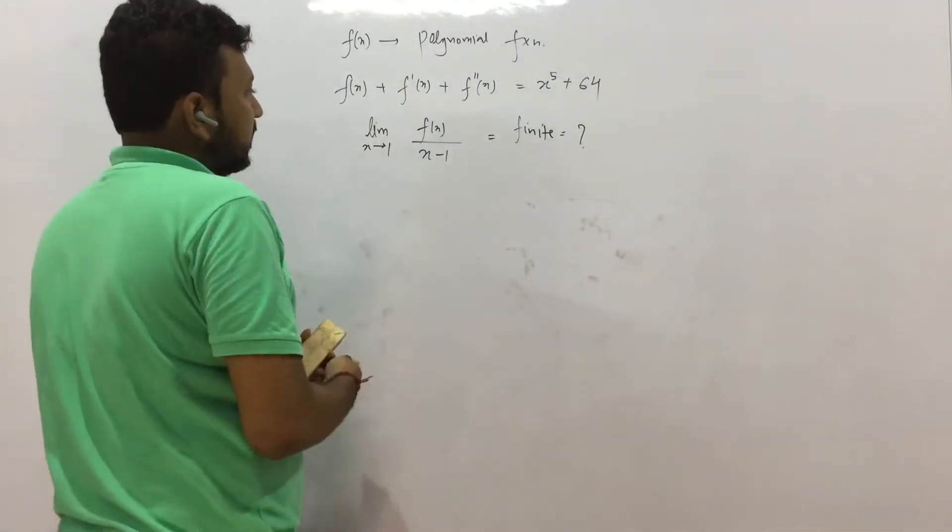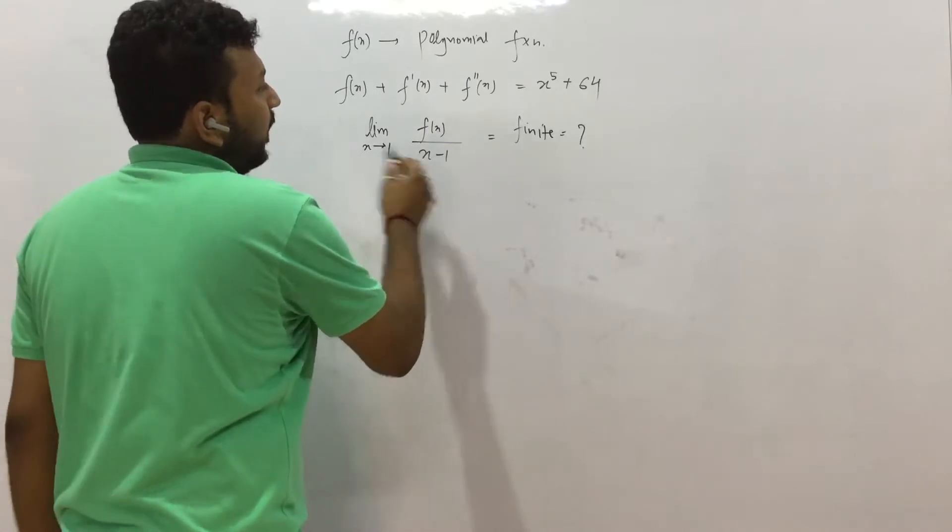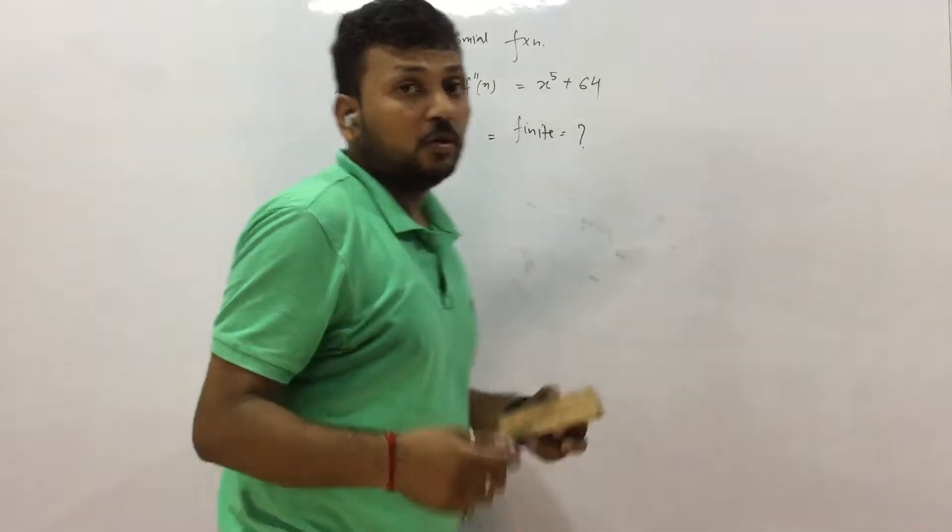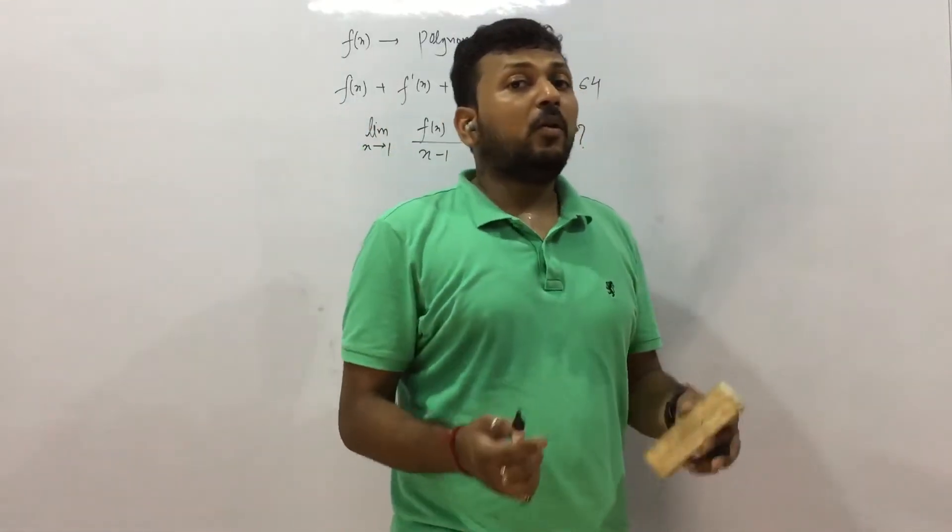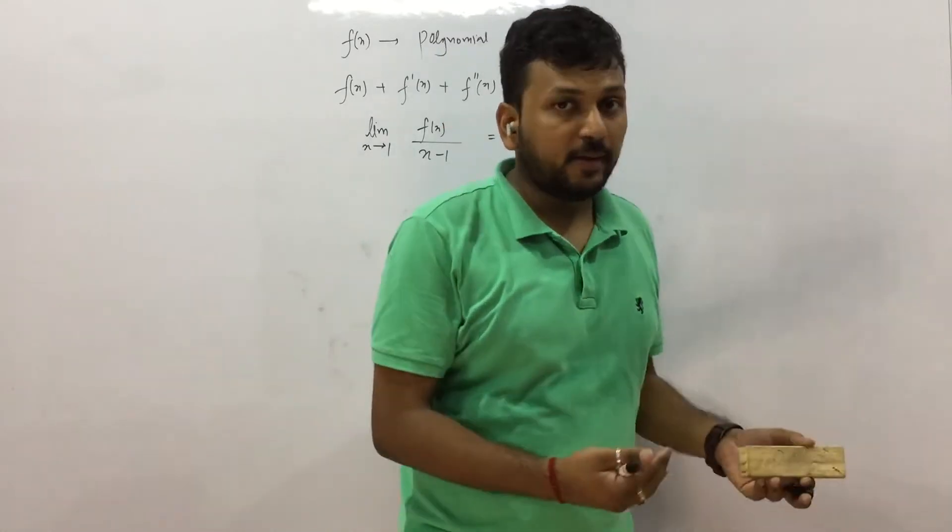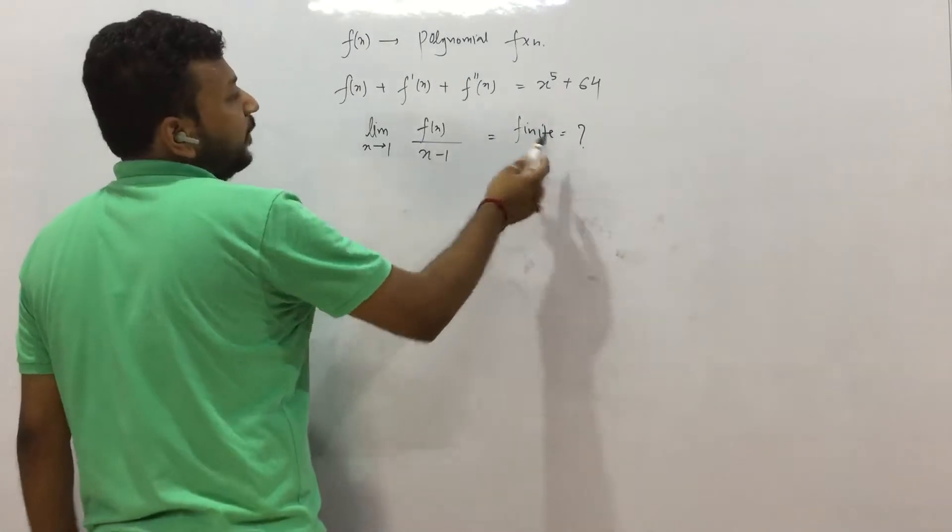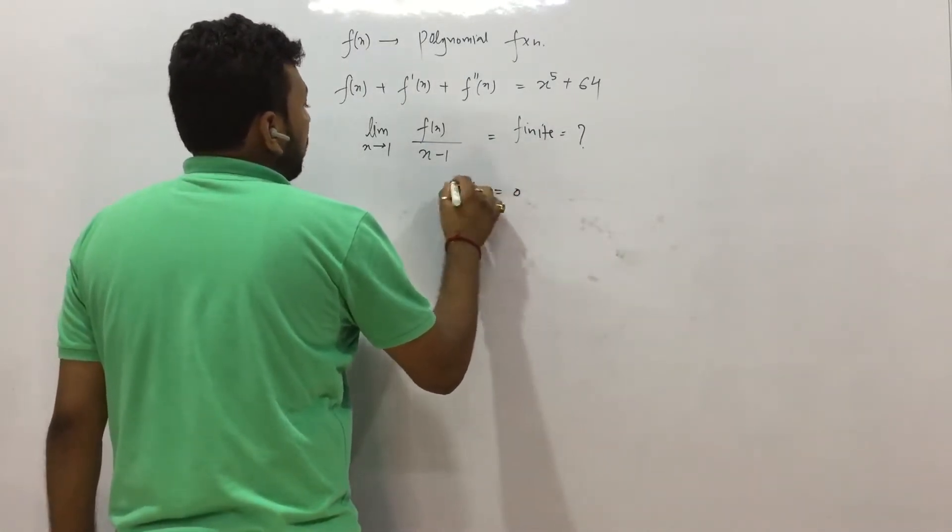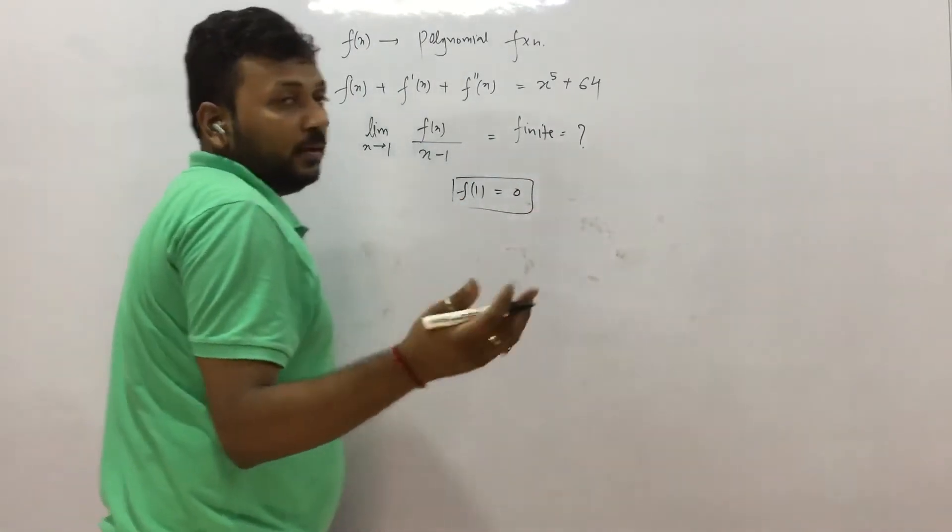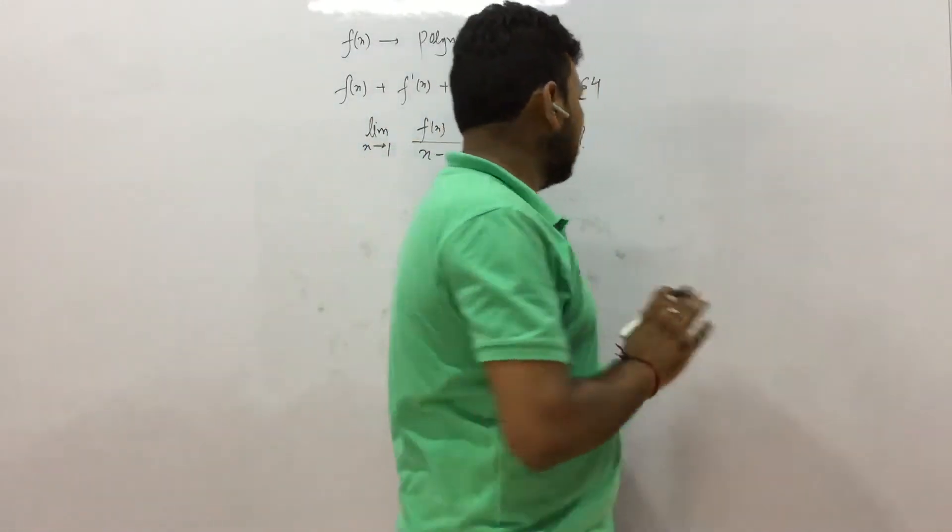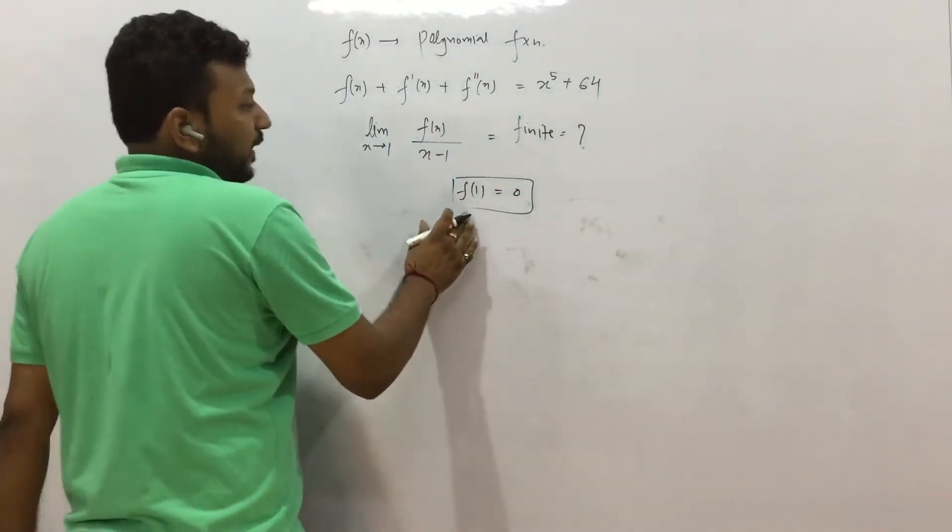First of all understand, when we put x equal to 1, denominator becomes 0. That means numerator has also to become 0 because it cannot otherwise be finite, right? So f(1) = 0. That is the only way it can be finite. Otherwise the quotient cannot exist.